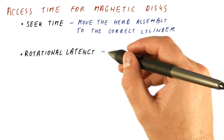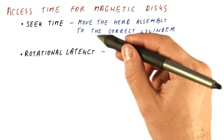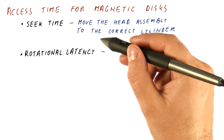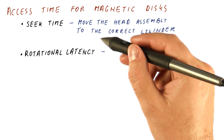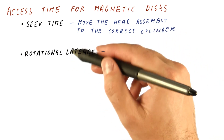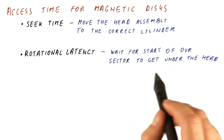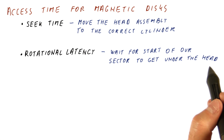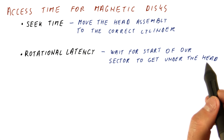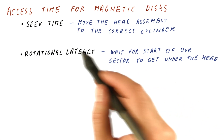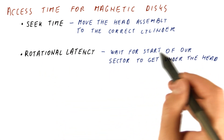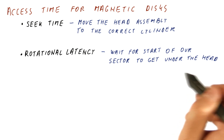Next, there is the rotational latency. After we have moved the heads, they're somewhere along the track, but not necessarily — and usually not — above the very sector that we are interested in. The rotational latency is about waiting for the start of our sector to finally get under the head that will read it. The head is sitting in one place, but the platter is rotating, so different parts of the track pass under the head. The rotational latency is how long until the beginning of our sector gets under the head.